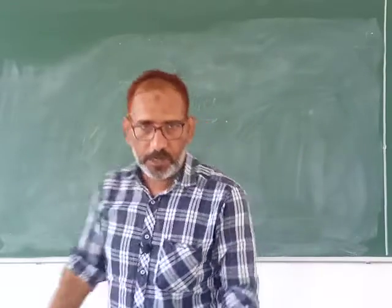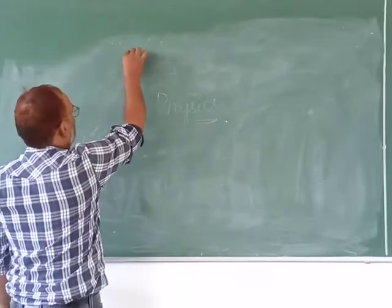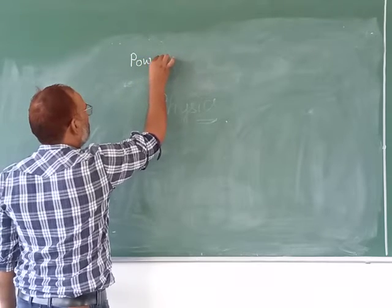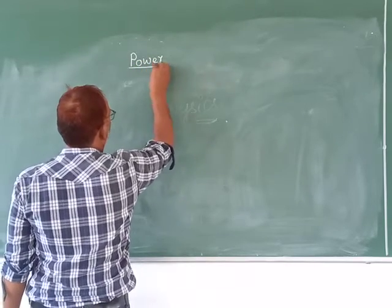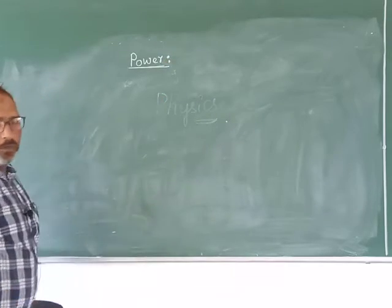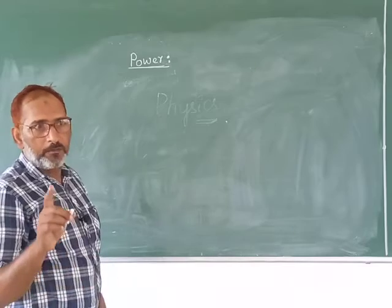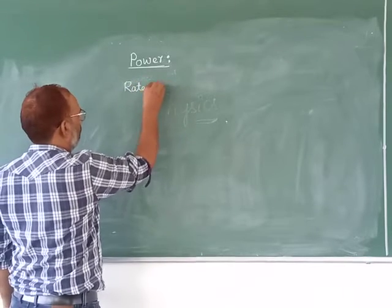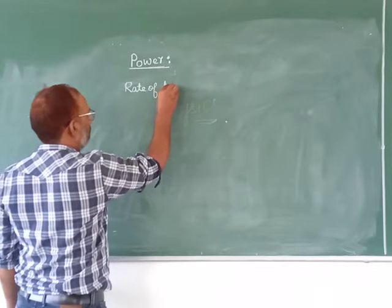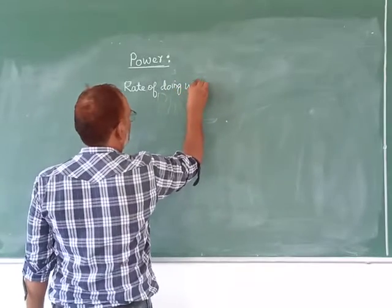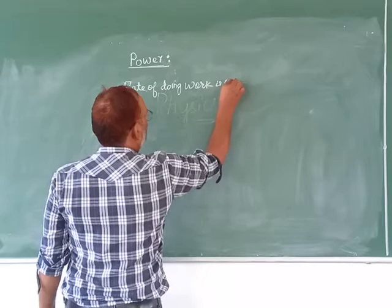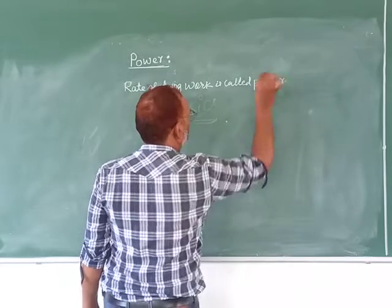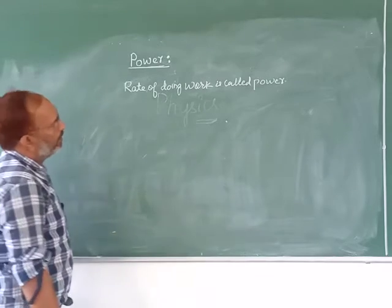What is power? The rate of doing work is called power. Work done over a period of time is called power. The rate of doing work is called power.